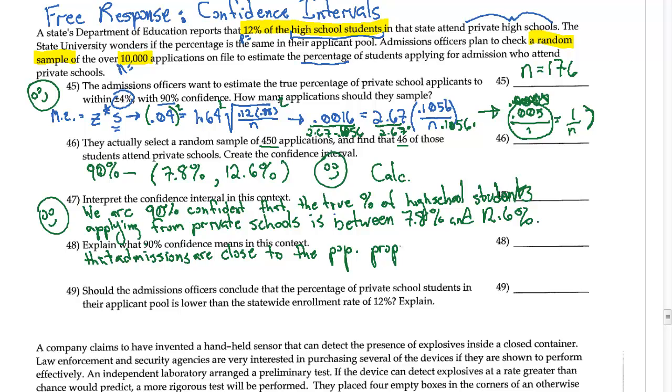that admissions are close to the population proportion we see in the high school students that attend private school.